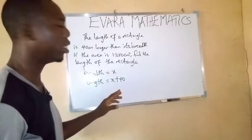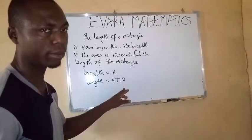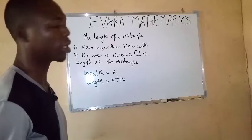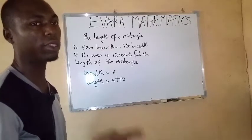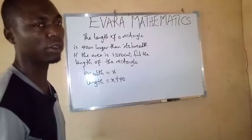So if the breadth is x, the length will be x plus 40. And similarly, you can also say that x represents the length. That means the breadth will be x minus 40.